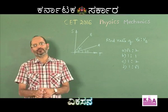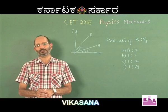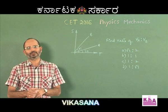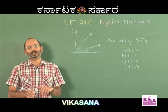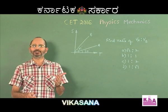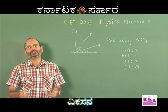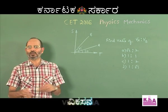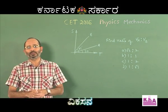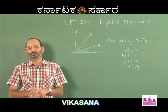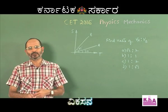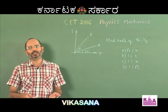The next category of problems involves graphs in one-dimension and two-dimension motion. Students should know all standard graphs and their meanings. For a speed versus time graph, the slope gives the magnitude of acceleration. For a velocity versus time graph, the slope gives acceleration. For a displacement versus time graph, the slope gives velocity, and for a distance versus time graph, the slope gives speed. Slope is the tangent of the angle that the tangent line makes with the time axis.